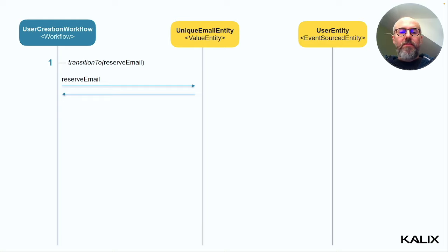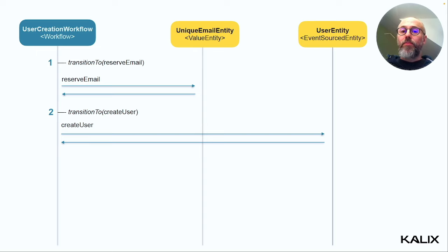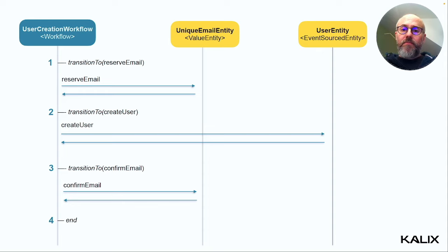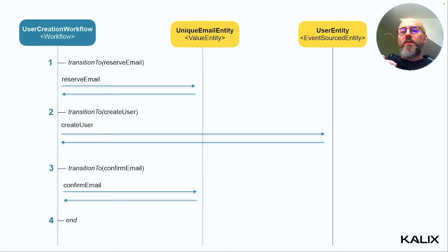In the sunny day scenario: I reserve the email, it returns, and the workflow says OK, now that we've reserved the email address, let's create the user. We move to the next step, create user, which calls the user entity and creates it. It returns, and now we can confirm the email — go back to the unique email entity and confirm that this email address is effectively in use by the user just created. When that call returns, I finalize my workflow. So: first transition → first step completes → transition to second step → it completes → transition to third step → third completes → transition to end.